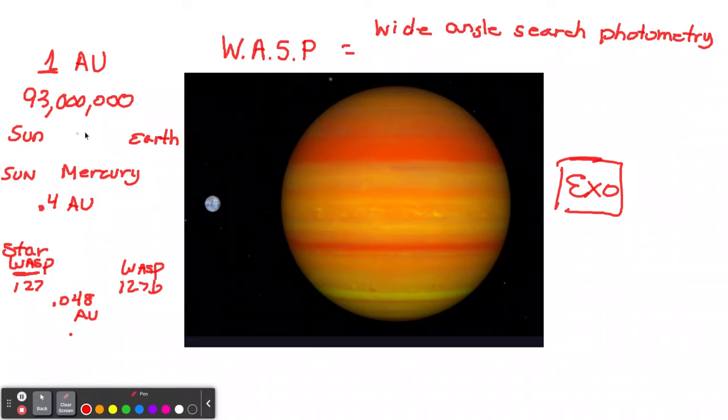And because it's very close to its star, it can orbit in about four days. A year on WASP-127b would be four days. Imagine that.